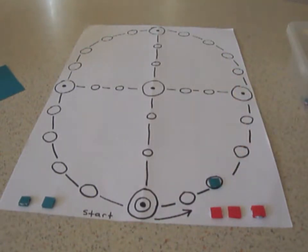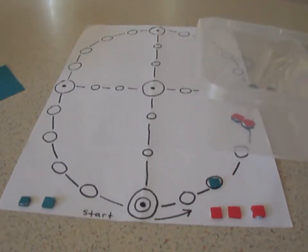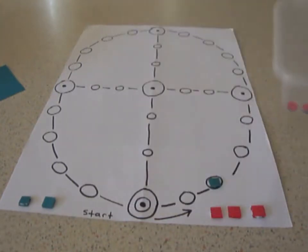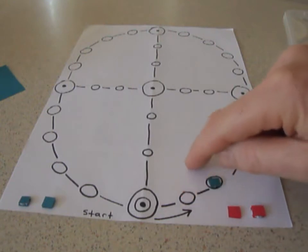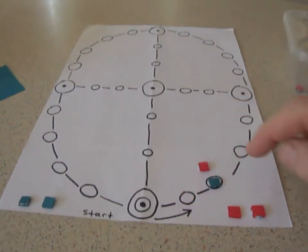So blue is allowed to move one piece two spaces, start on the start space and then move two: one, two. Now red's turn. Okay, now how do we make sure the rolls are always fair? We count to five: one, two, three, four, five. And we stopped and the result is two reds.